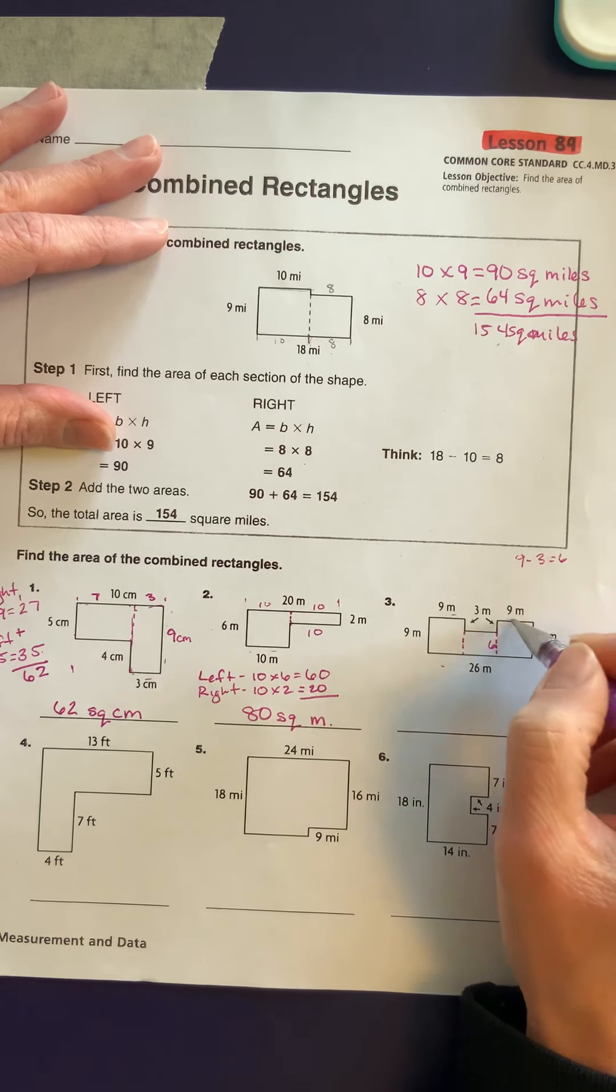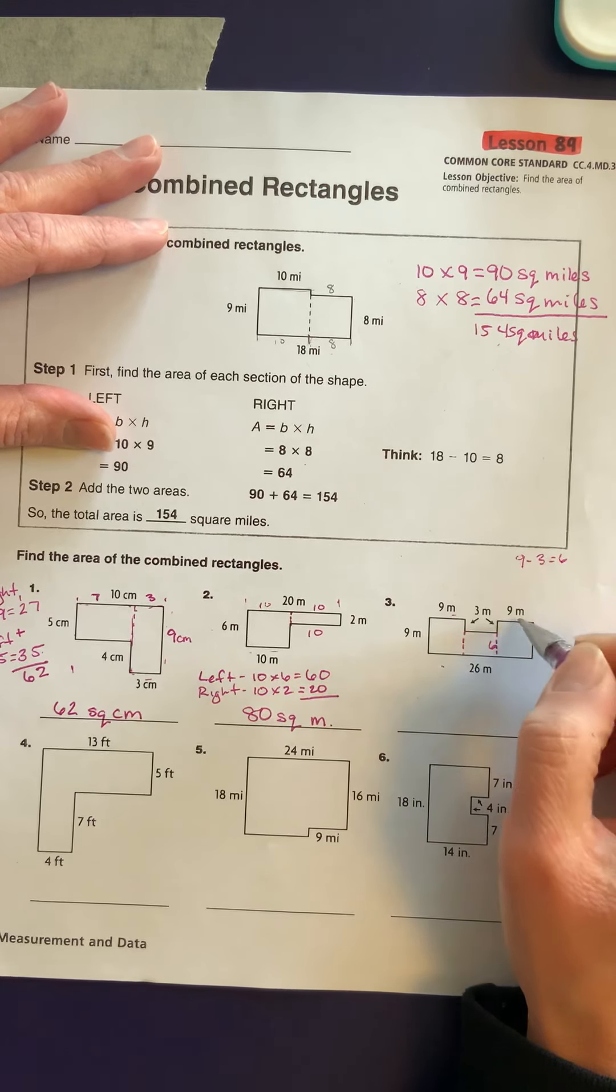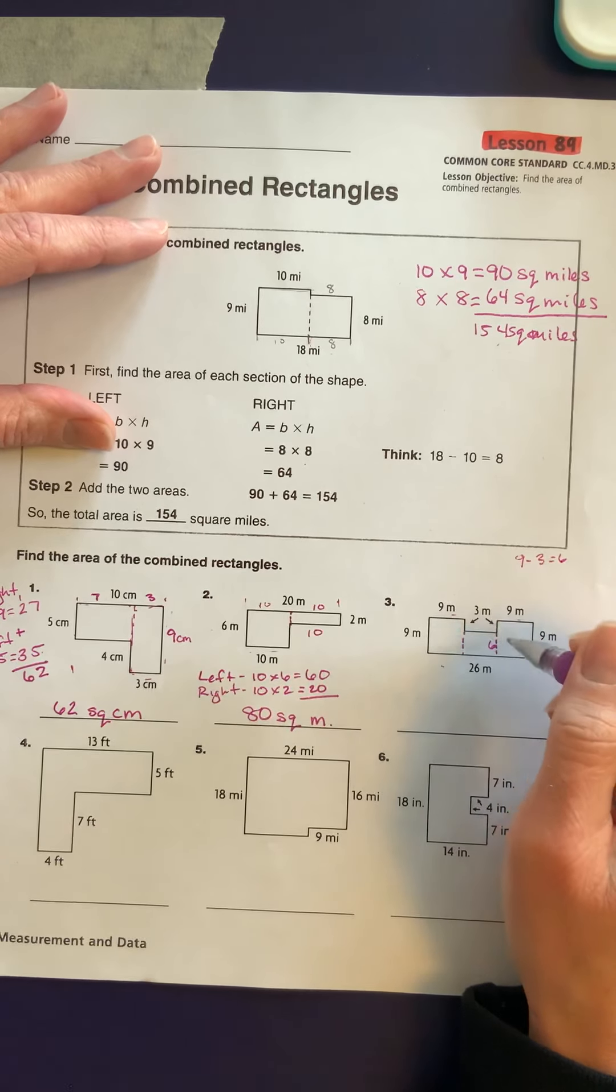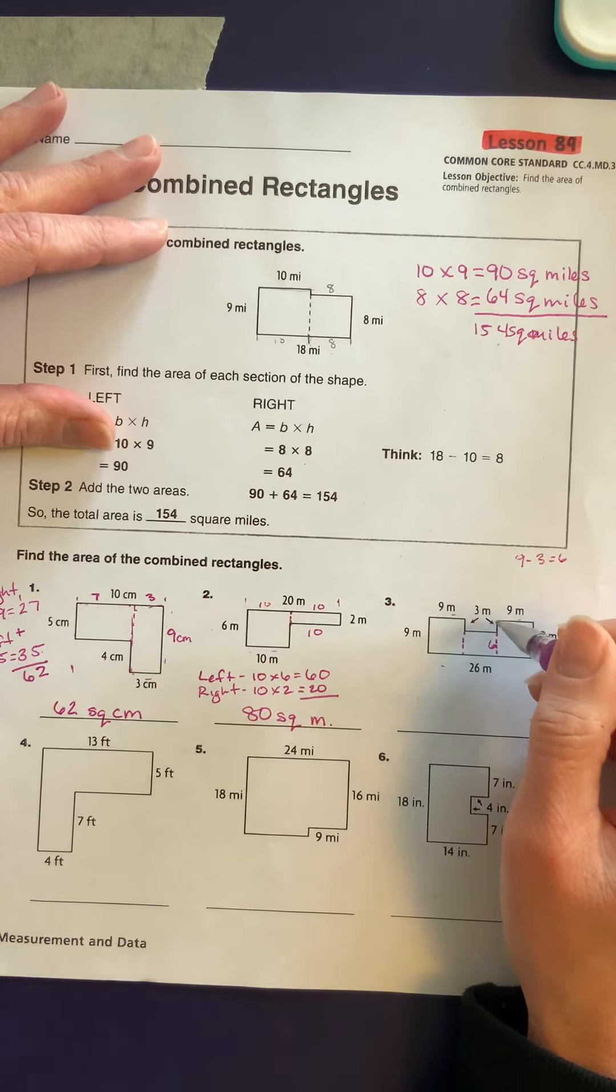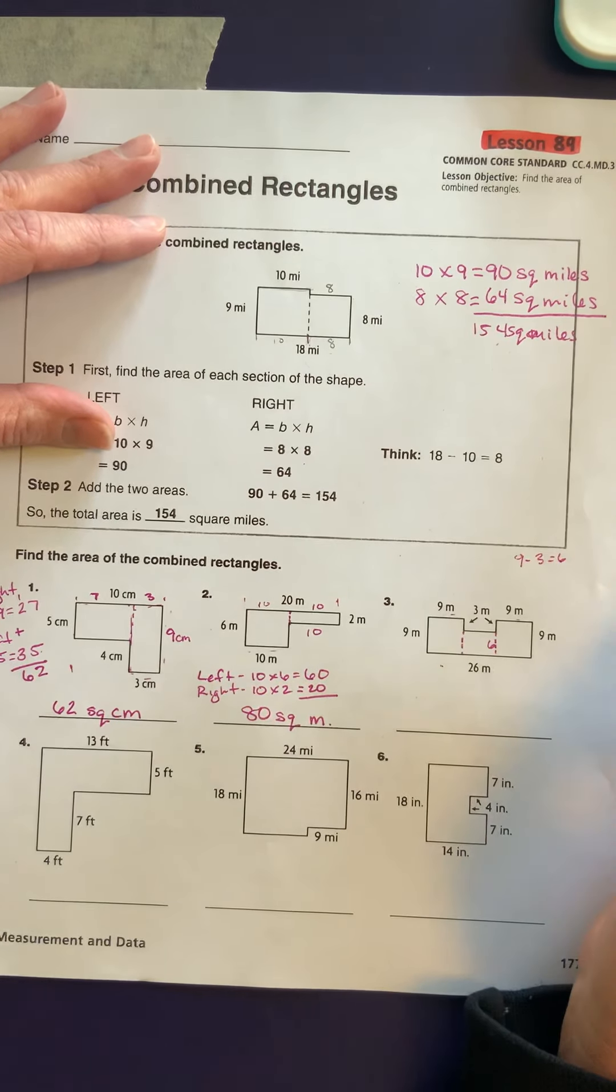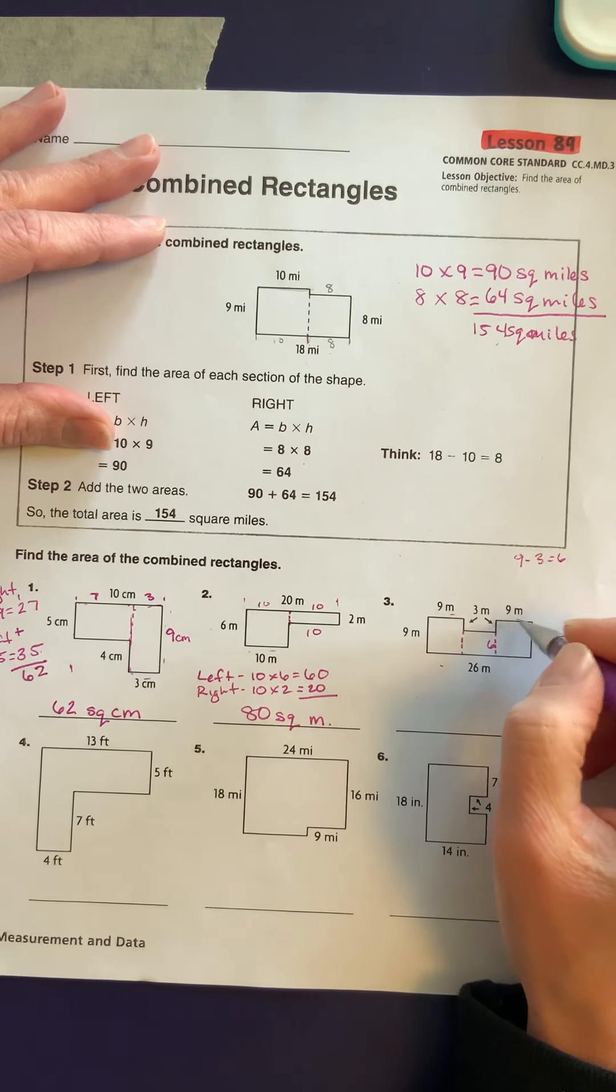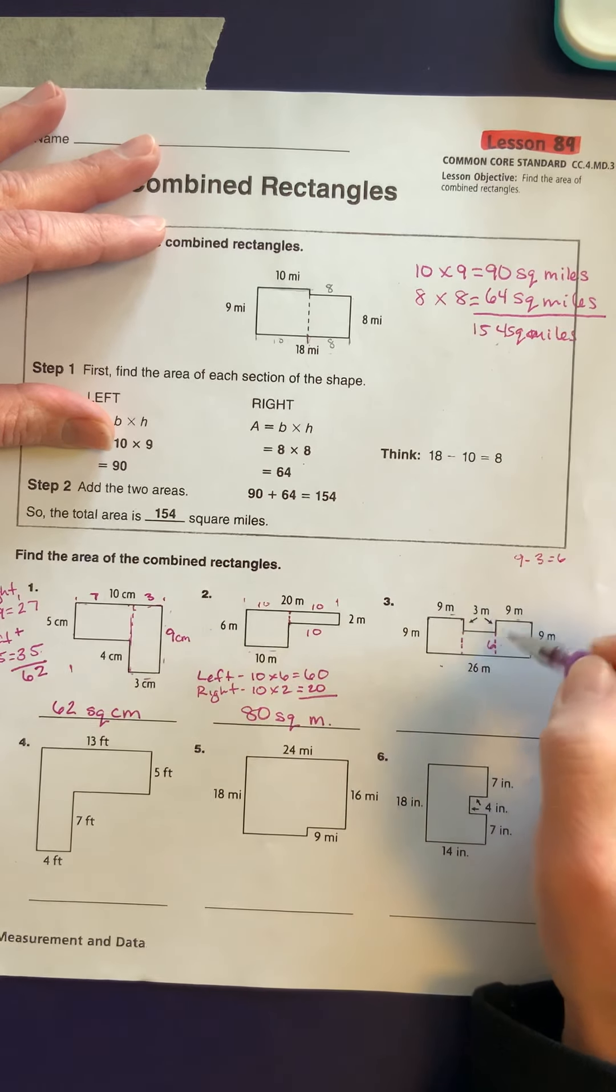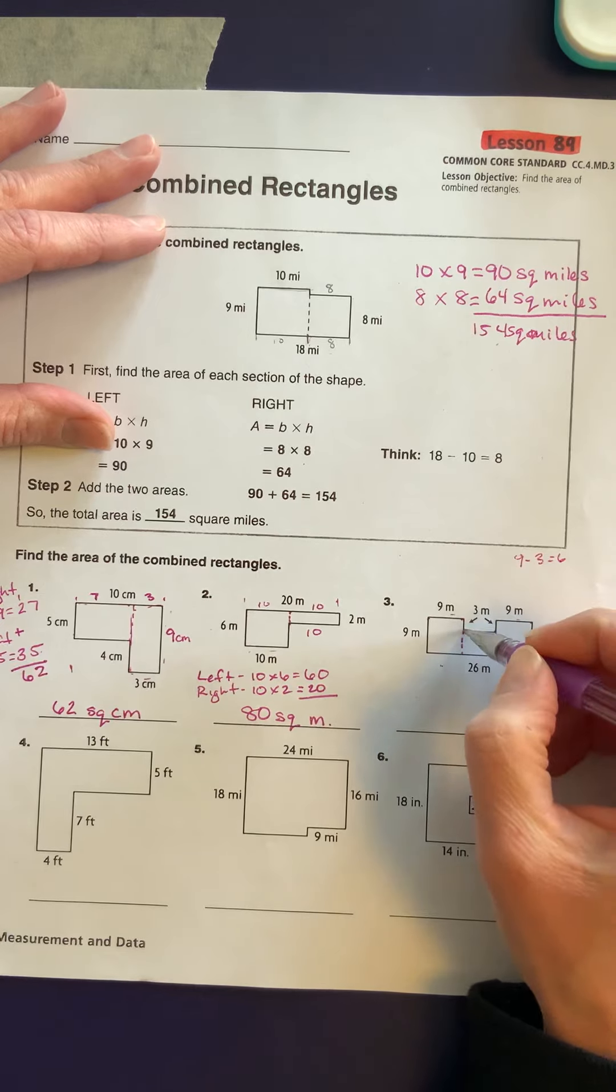This is going to be 9 times 9, the base times the height. But my center one, I know the height of it is 6 because I took away the 3, but I don't know the distance between here and here. I know that it's a total of 26, and I know from here to here is 9, and from here to here is 9.